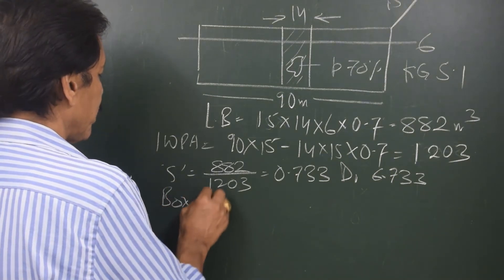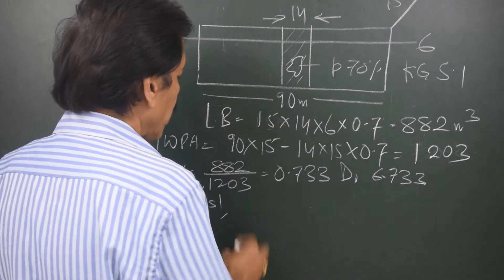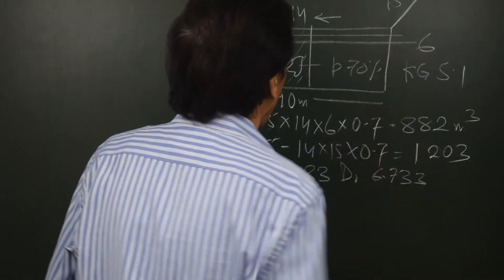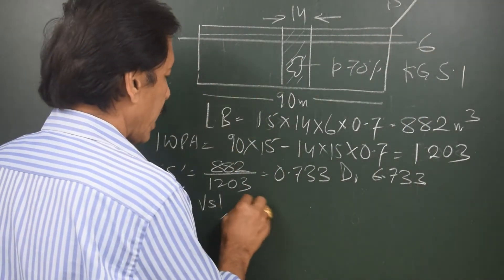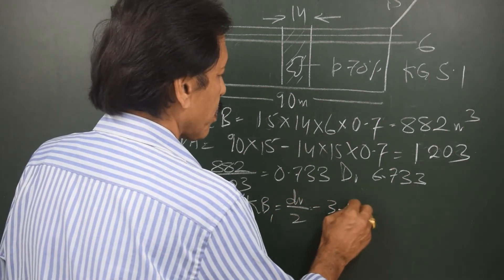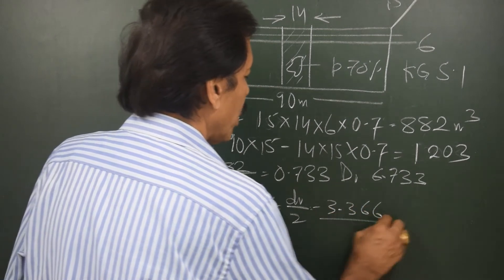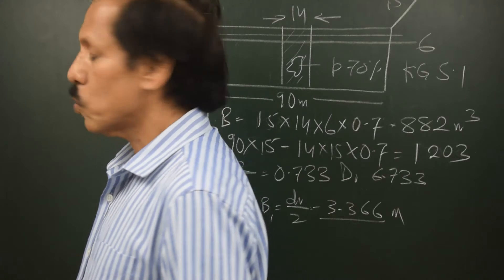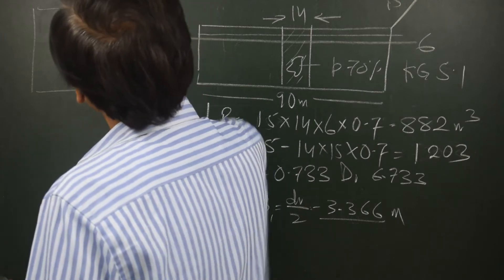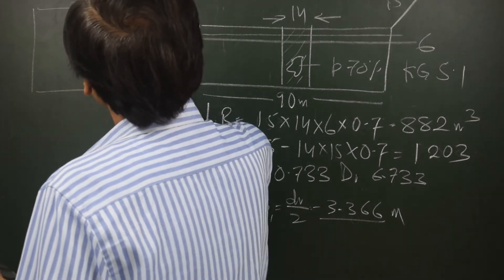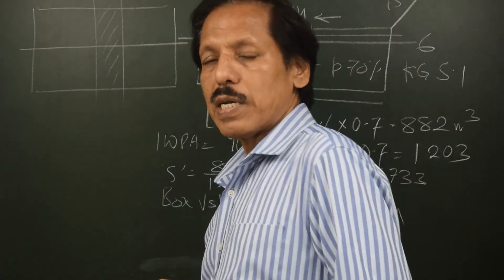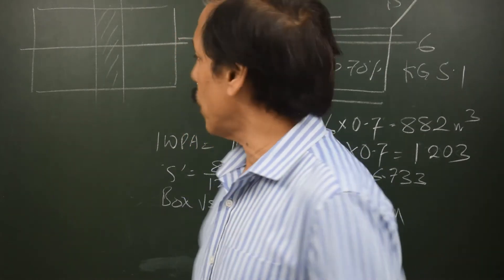This is a box vessel, and the damage is vertically uniform from the keel to the final waterline. So we say KB₁ equals draft divided by 2, giving KB = 3.366 meters. For BM, we look at the plan of the waterplane. The damaged compartment is shown, and we take the moment of inertia about the centerline passing through the center of floatation.